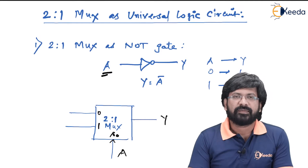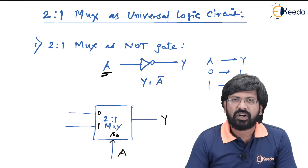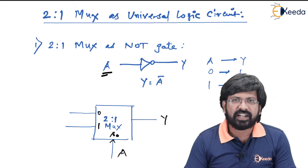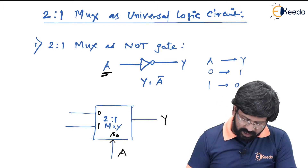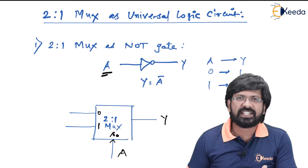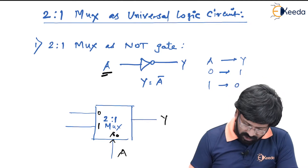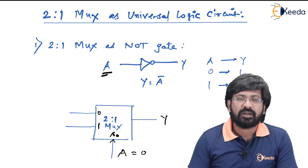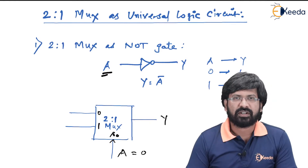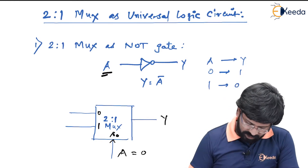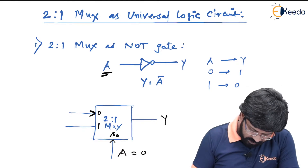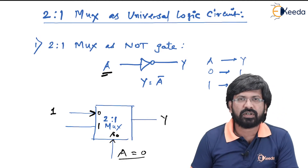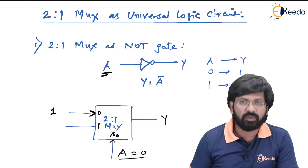When S0 equal to 0, Y gets connected to I0 input. When S0 is equal to 1, output gets connected to I1. Now, when S0 is equal to 0, it is possible only when A is equal to 0, because A and S0 are not different now. So when A is equal to 0, Y gets connected to I0, but in the NOT gate what output we want is 1. Therefore, I0 will have logic 1 applied. When A is equal to 0, Y gets connected to I0, and I0 is applied with logic 1, so Y becomes equal to 1.